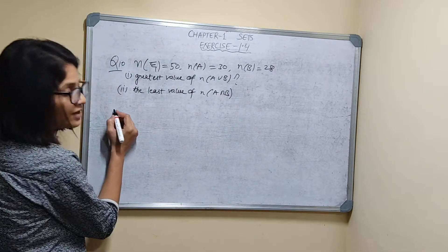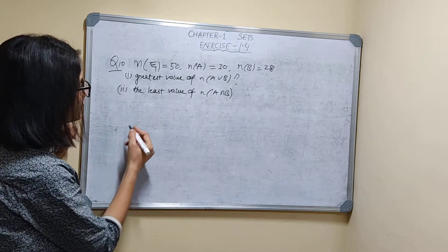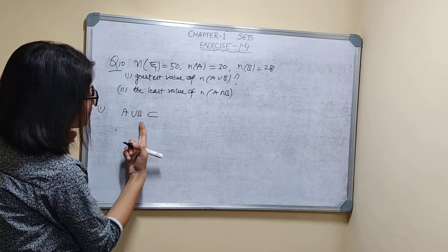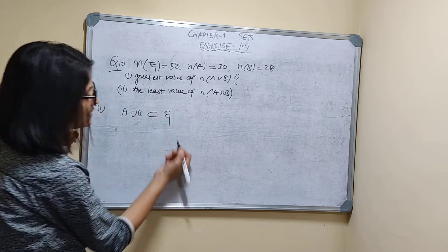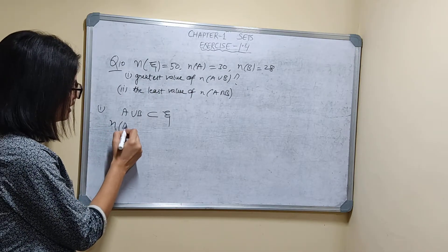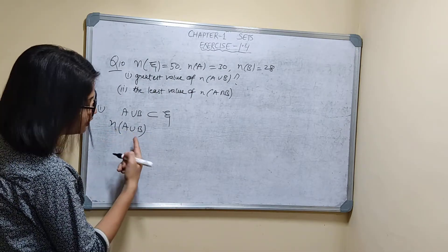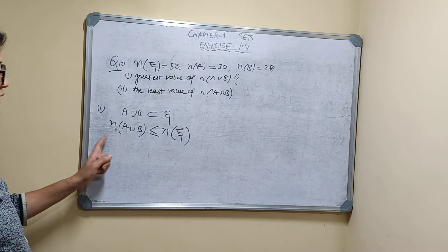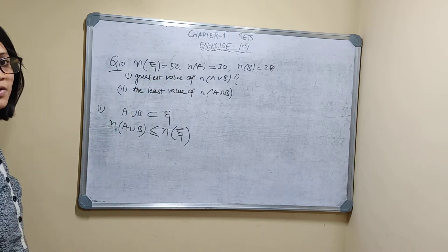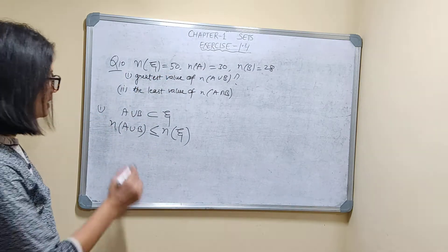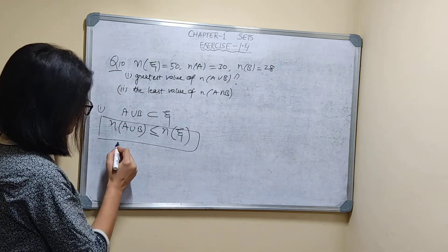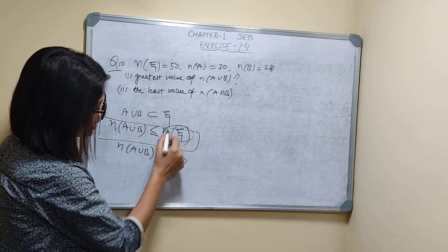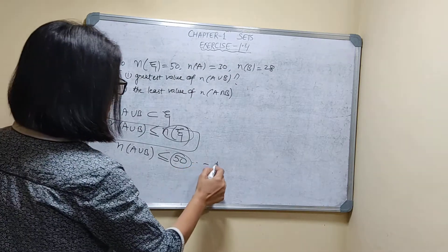Every set is a subset of a universal set, so A∪B will be a subset of the universal set. Therefore N(A∪B) will always be less than or equal to N(ε), because it can't be more than the number of elements in the universal set. So N(A∪B) ≤ 50, since N(ε) is given as 50. This is equation number one.